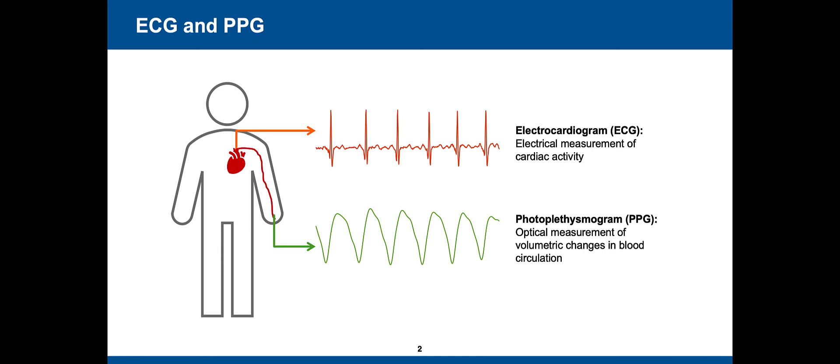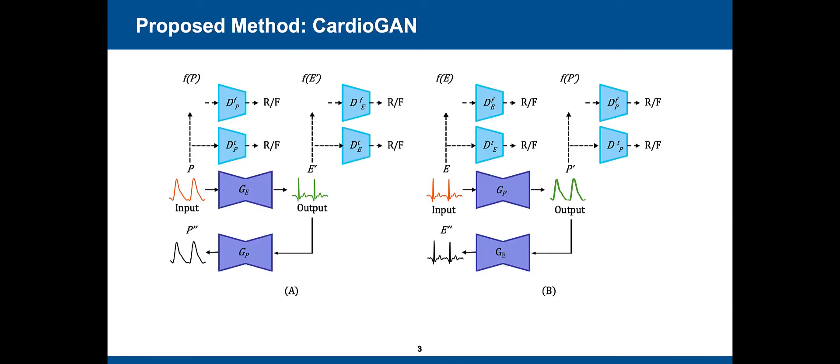we propose CardioGAN. CardioGAN takes PPG as input and generates ECG. The proposed network utilizes an attention-based generator to learn local salient features, as well as dual discriminators to preserve the integrity of generated data in both time and frequency domains.